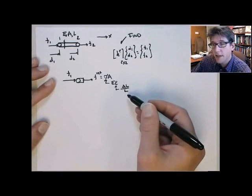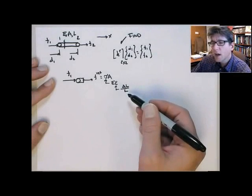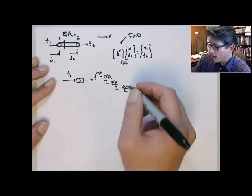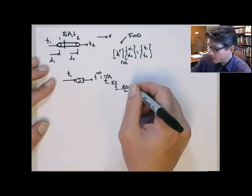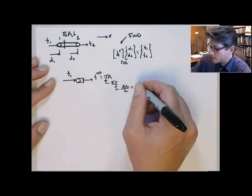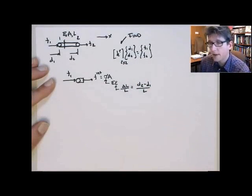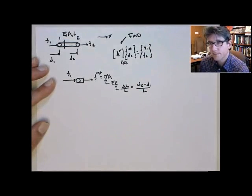Here's the original length of the element. We assume this is going to be small deformation, so that doesn't change too much. The change in length is simply going to be d2 minus d1 over the length. So that's the strain.